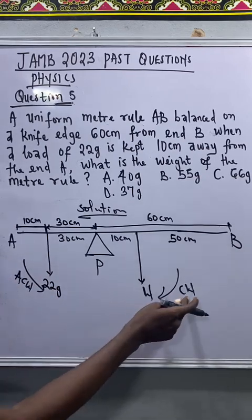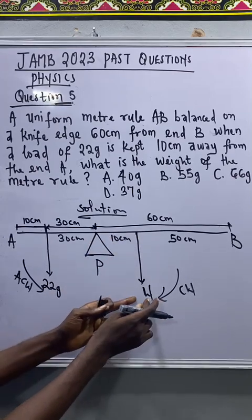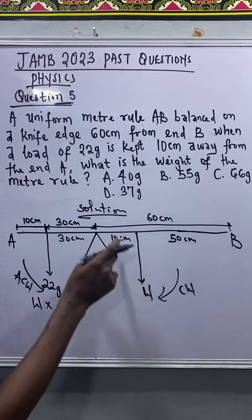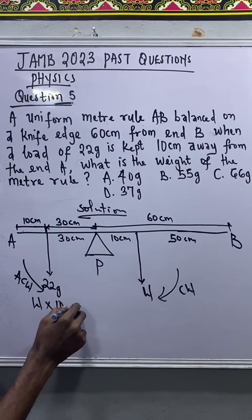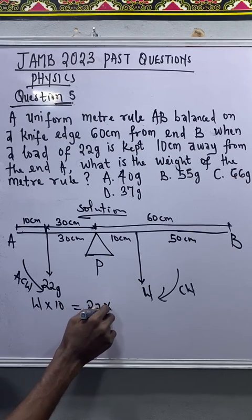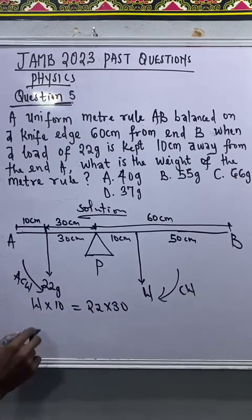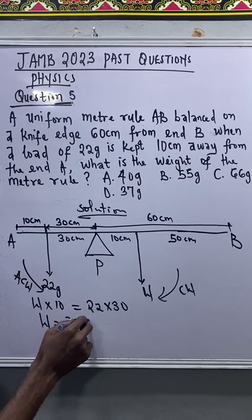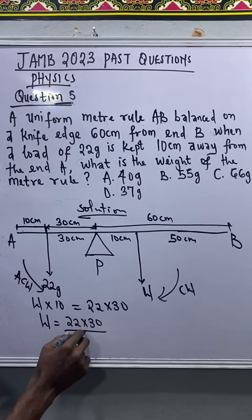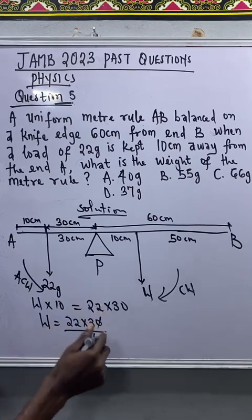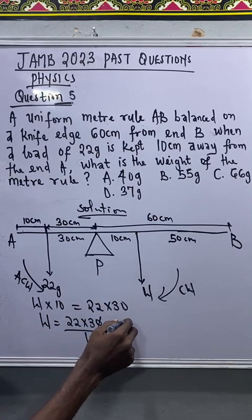So weight times 10, W times the distance which is 10 centimeter, must be equal to 22 times 30. Let's make W the subject of formula. W will be equal to 22 times 30 divided by 10. 22 times 30, that will give me 66 gram.